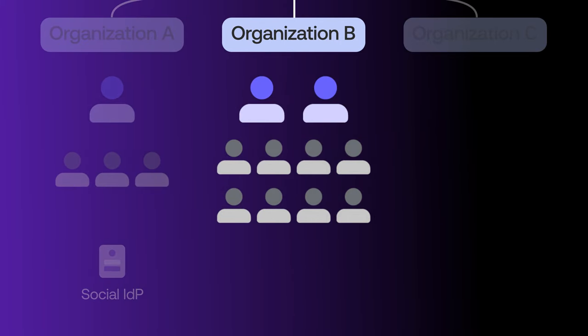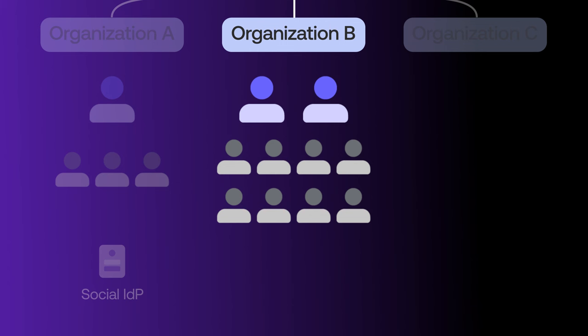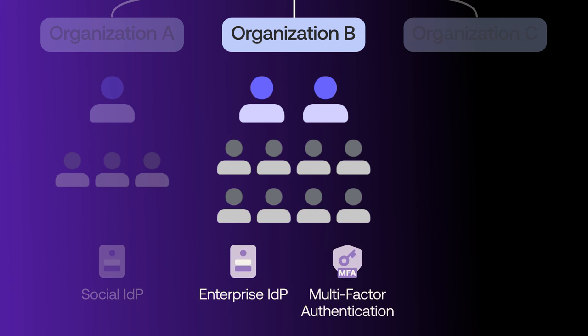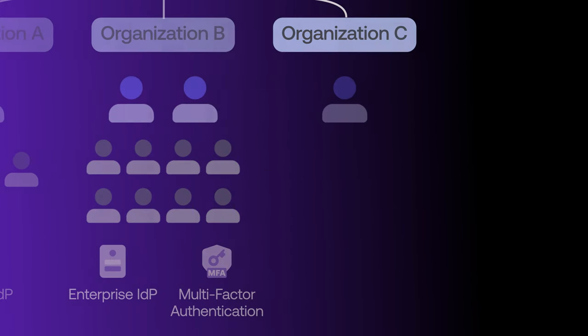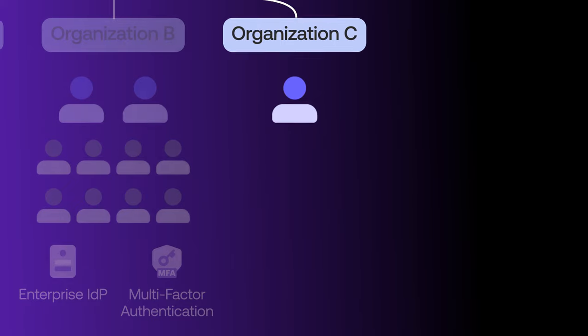Organization B is a larger corporation, so they're expecting not only enterprise IDPs, but also multi-factor authentication, or MFA, as an additional layer of security. And Organization C is a brand new startup with only one employee — the founder — and all they really want is a seamless experience.